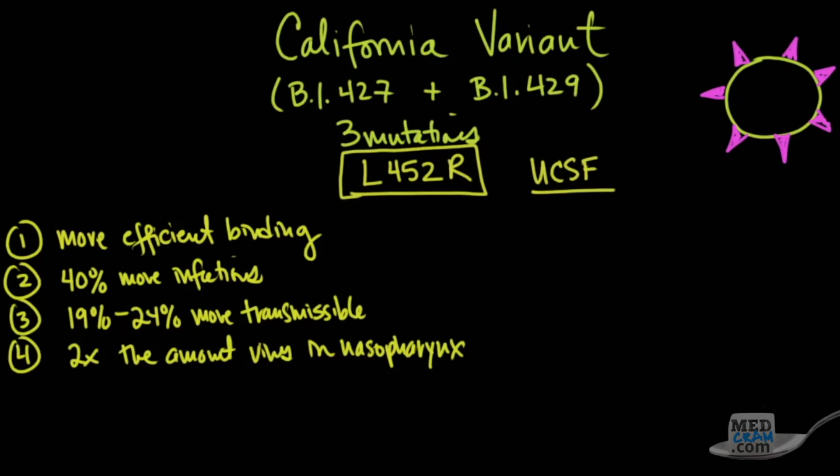In some research from UC San Francisco, they looked at 324 hospitalized patients. 69 had this particular variant, where 255 did not. Out of those 69 that had the variant, seven patients died. Out of the 255 that did not, five died.